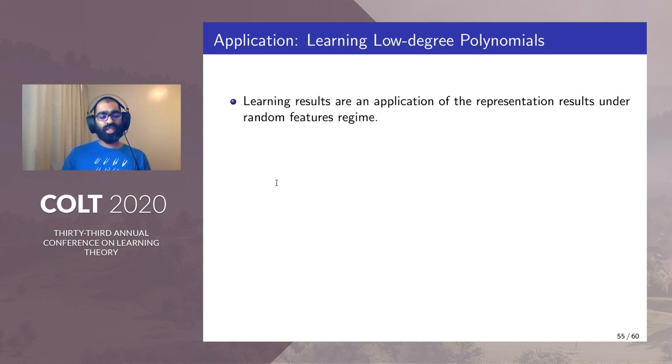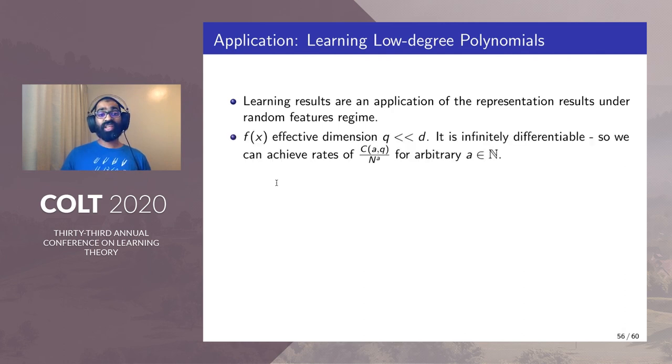The learning results as we stated are an application of the representation results under the random features regime. f(x) has an effective dimension much smaller than d which is q. It is infinitely differentiable so we can achieve the rates of c(a,q)/n^a for arbitrary a ∈ ℕ.